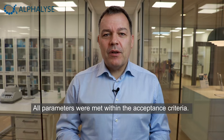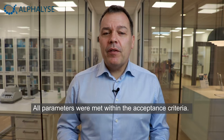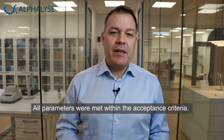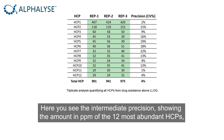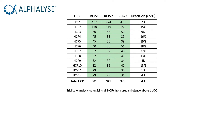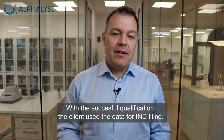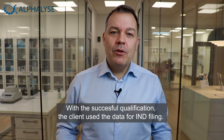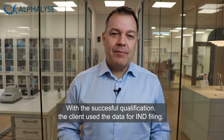All parameters were met within their acceptance criteria. Here you see the intermediate precision showing the amount in PPM of the 12 most abundant HCPs as well as the total amount of host cell proteins. With the successful qualification, the client used the data for IND filing.